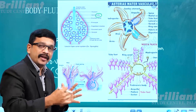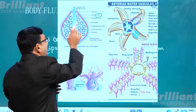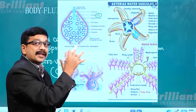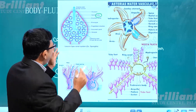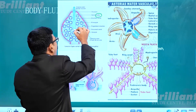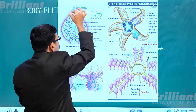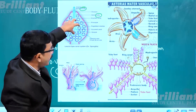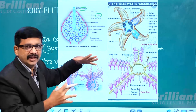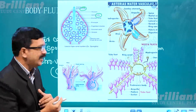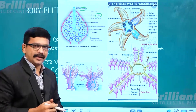Through the ostia, water enters the body, and through that water, nutrients and gases enter as well. Internally, there are many canals and cavities like a spongocoel, flagellated chambers, and certain cavities. Finally, that water exits through an apical opening called the osculum. This is the transporting system found in sponges.